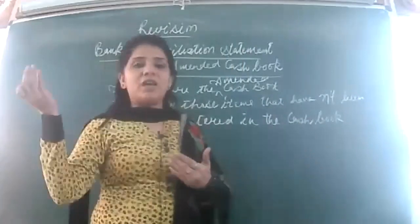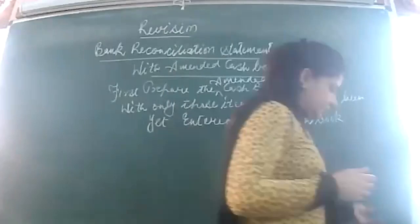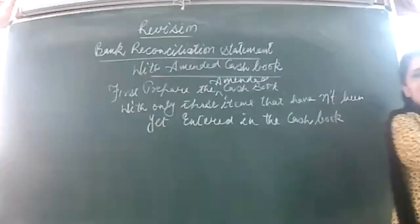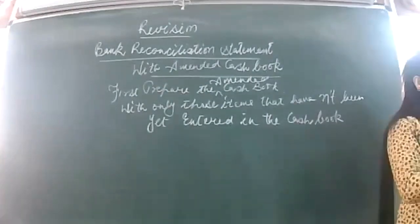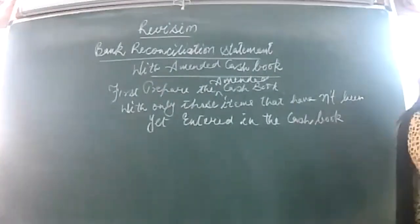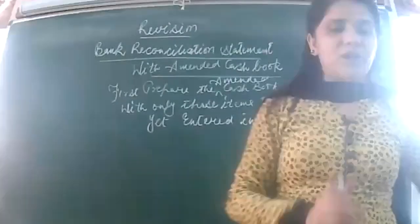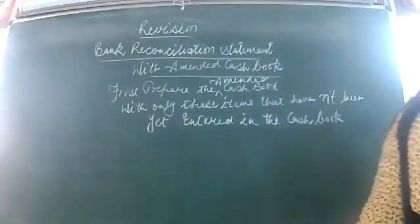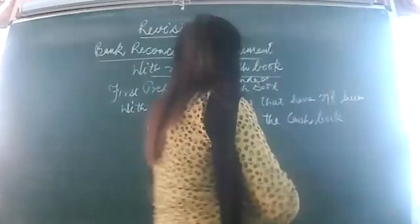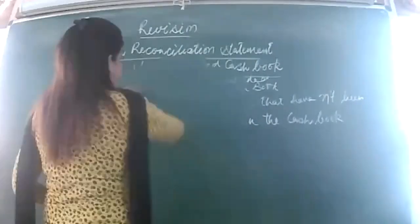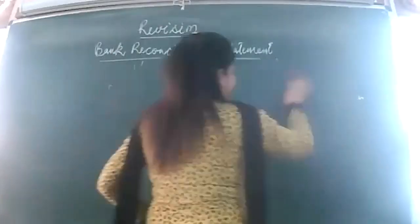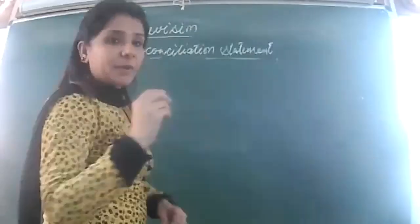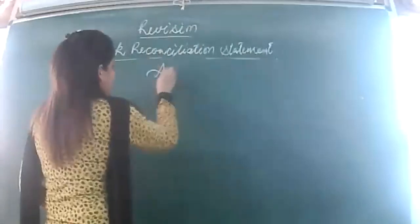Let's begin. First, I will be reading the points and analyzing which items have not yet been entered in the cash book — only those I will put in my amended cash book. We are revising BRS, and I will first make the changes in the cash book. You can call it the amended cash book or the adjusted cash book.